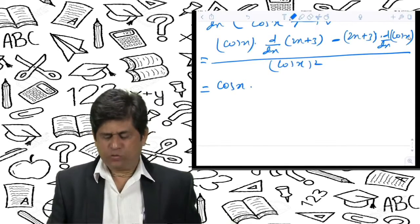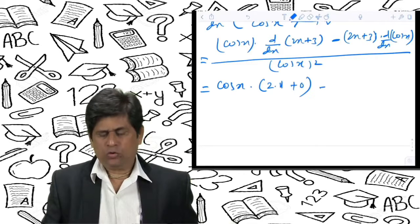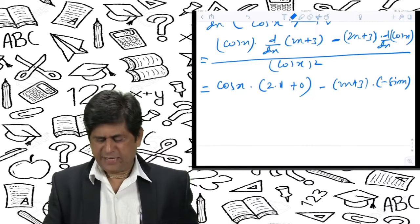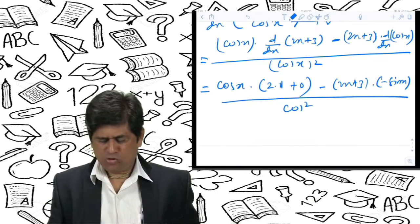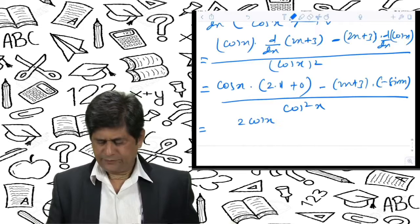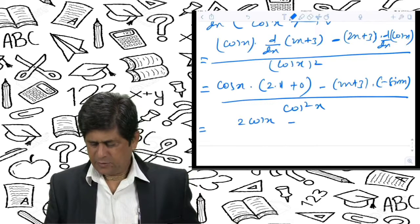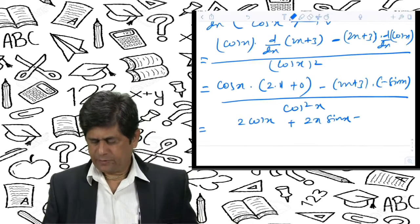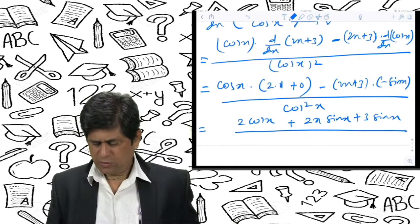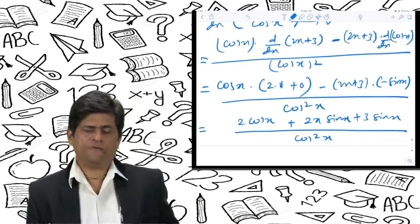Now simplifying: the derivative of 2x + 3 is 2 (derivative of 2 times x is 2·1 = 2, derivative of constant 3 is 0). The derivative of cos x is −sin x. So the expression becomes: [cos x · 2 − (2x + 3)(−sin x)] / cos²x = [2cos x + (2x + 3)sin x] / cos²x. This is the final answer for the function given in the form of a quotient.